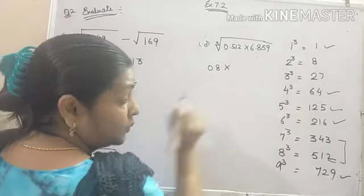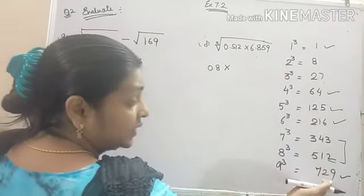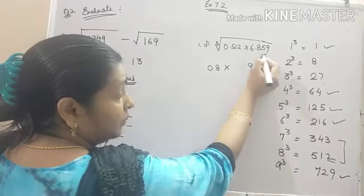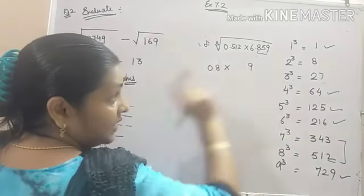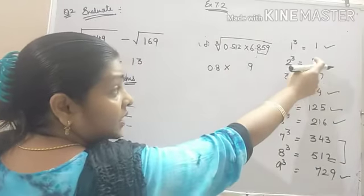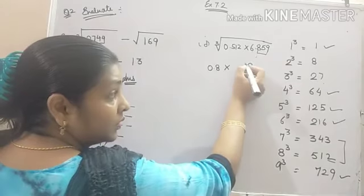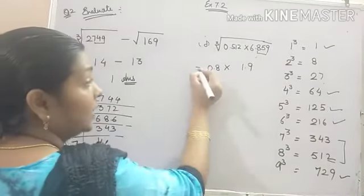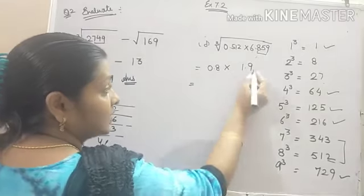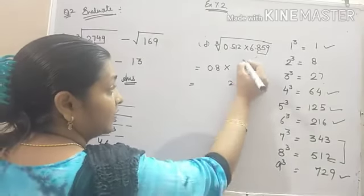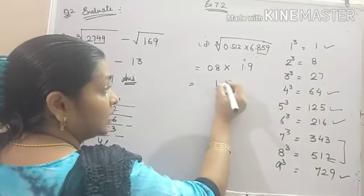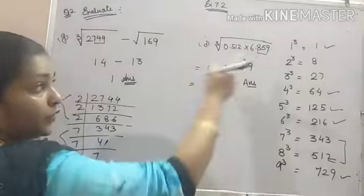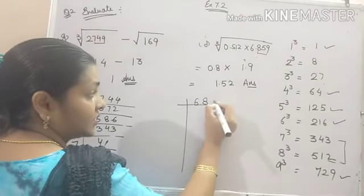Now the next number is 6.85. Most probably it will be a perfect cube. So perfect cube is there and it is ending with 9. So ones digit is 9. Make group of 3. 6 is left. 6 is greater than the cube of 1. So here 1.9 should come. And now multiply both the numbers. 8 nines are 72. 7 carry, 8 ones are 8 plus. 1.52 is your answer.